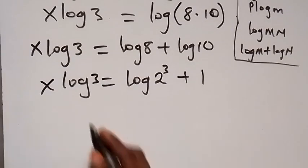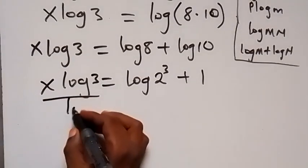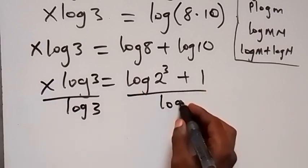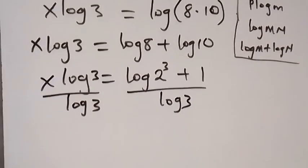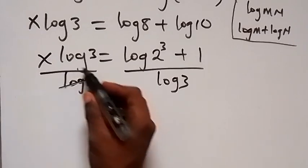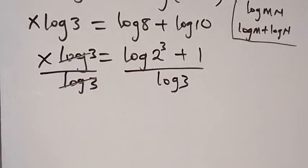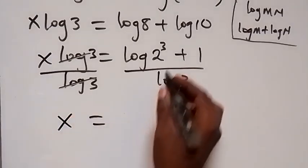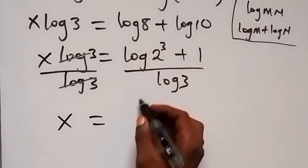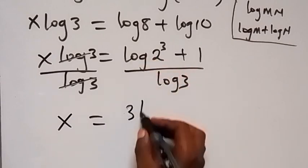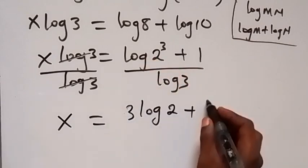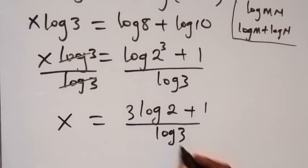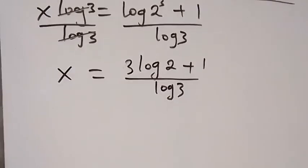We can divide both sides by log 3 to simplify further. Log 3 cancels on the left, so we have x equals to 3 log 2 plus 1, then over log 3.